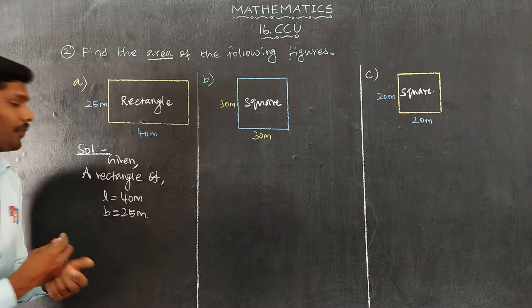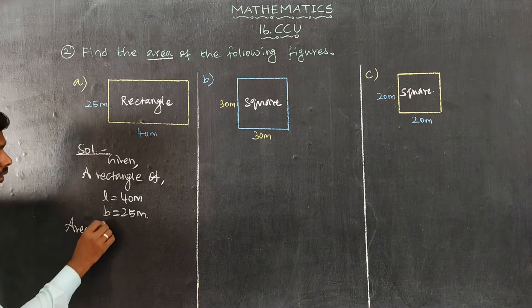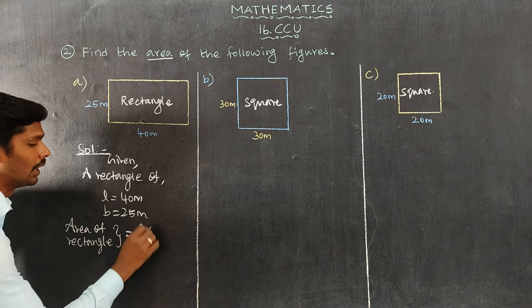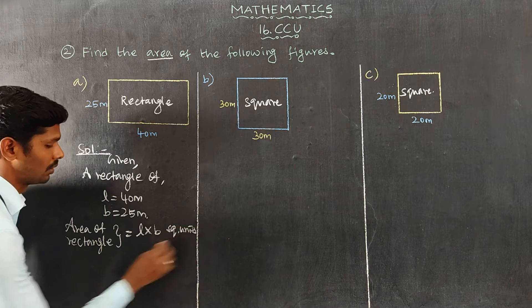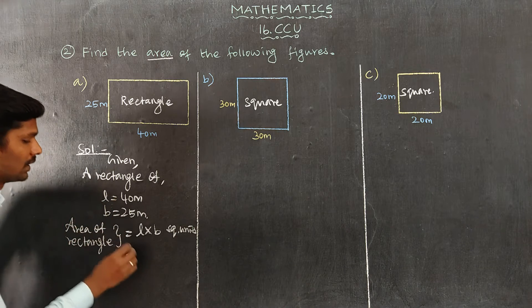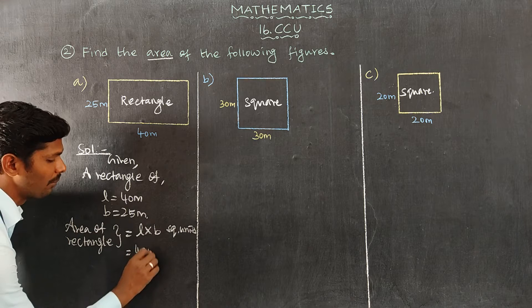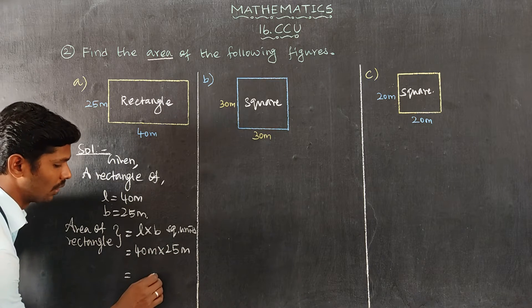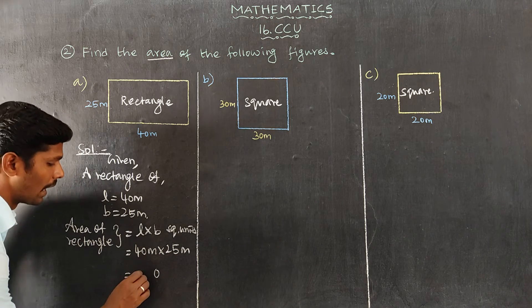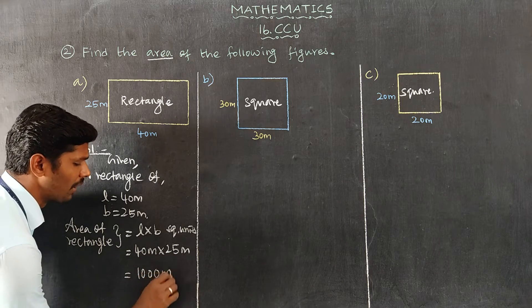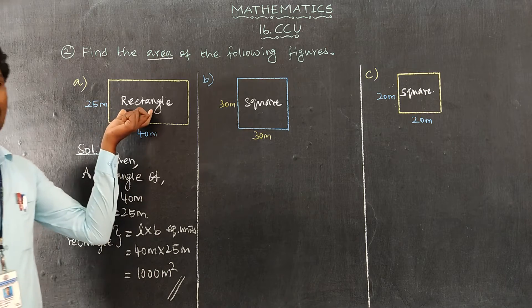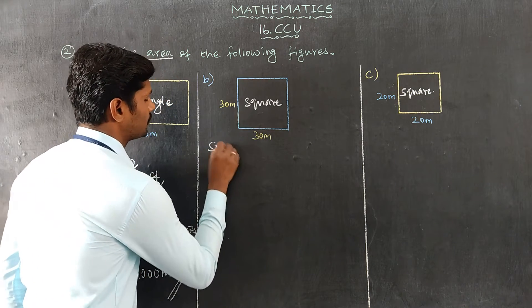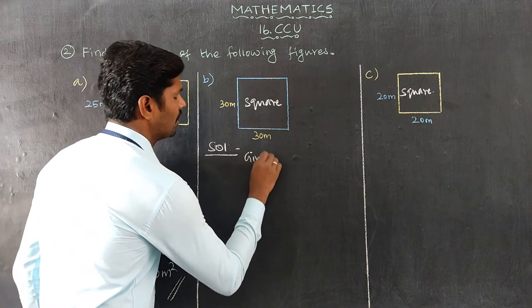Then, area of rectangle equals L times B square units. Length 40 meters and breadth 25 meters. 40 meters into 25 meters equals 1000 square meters.